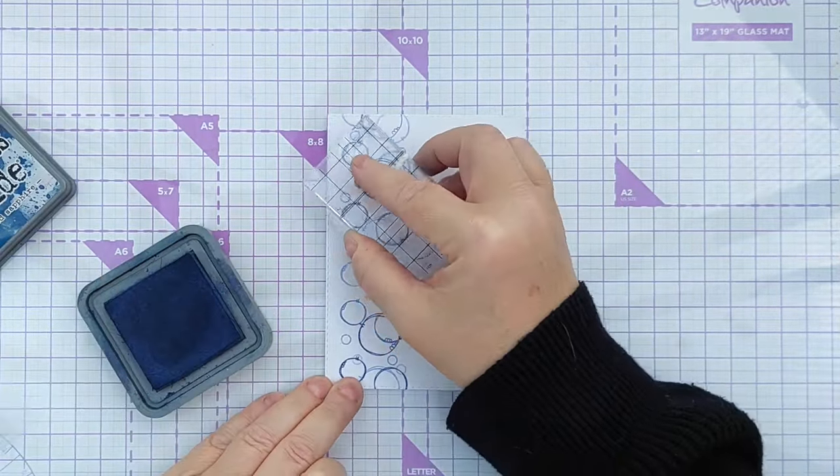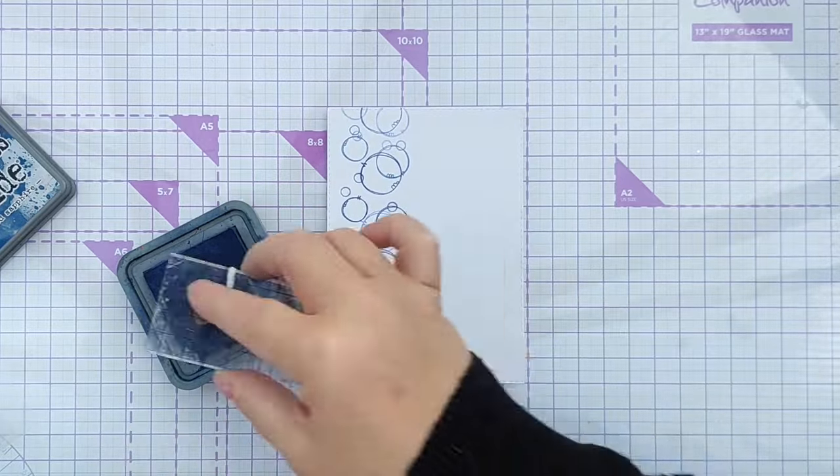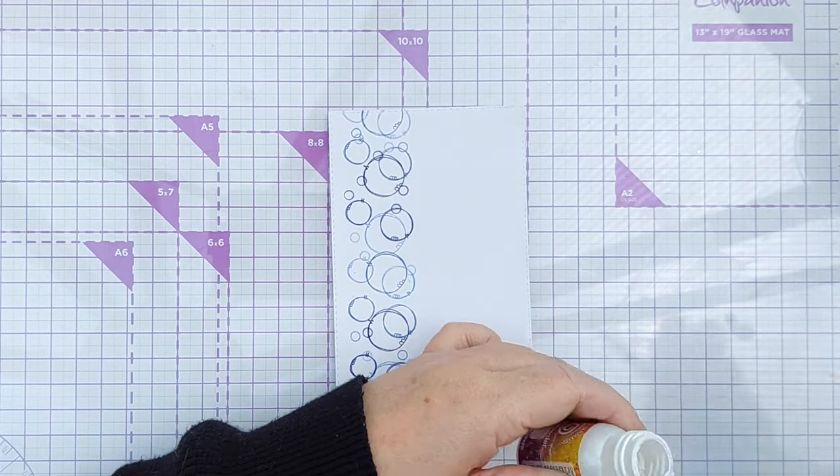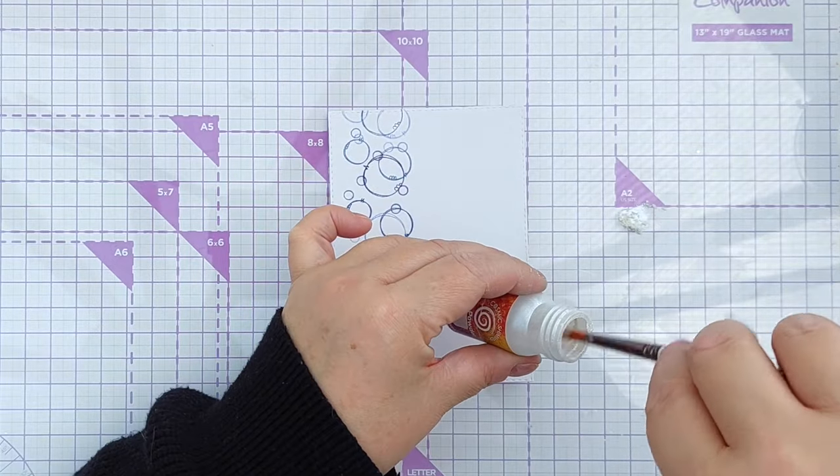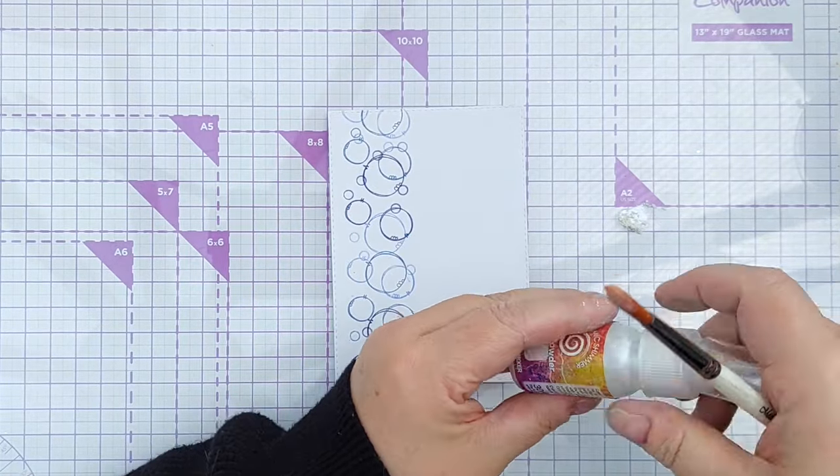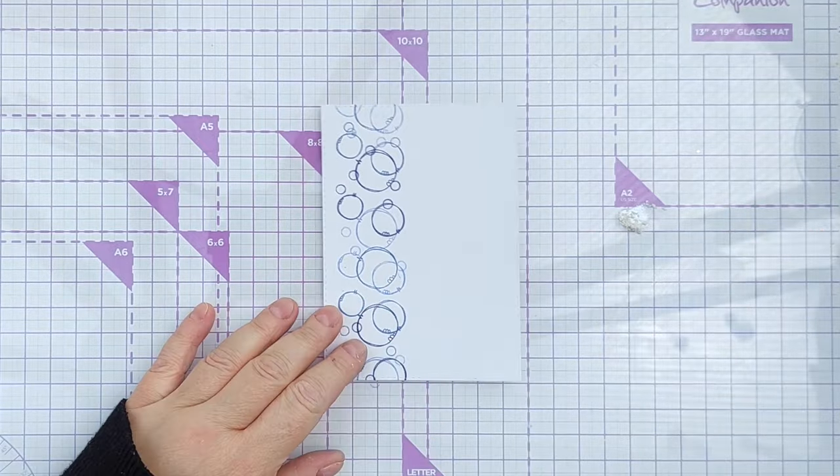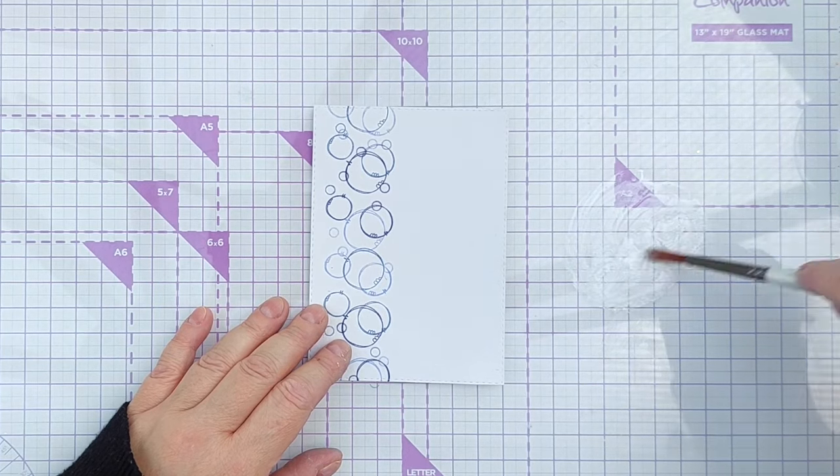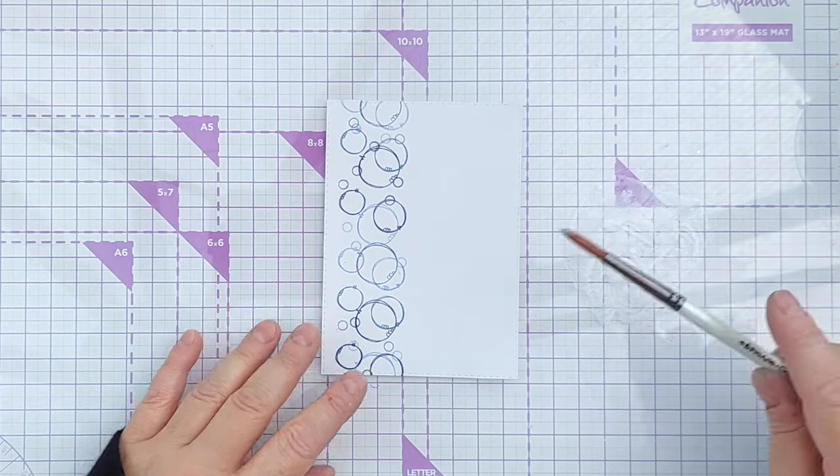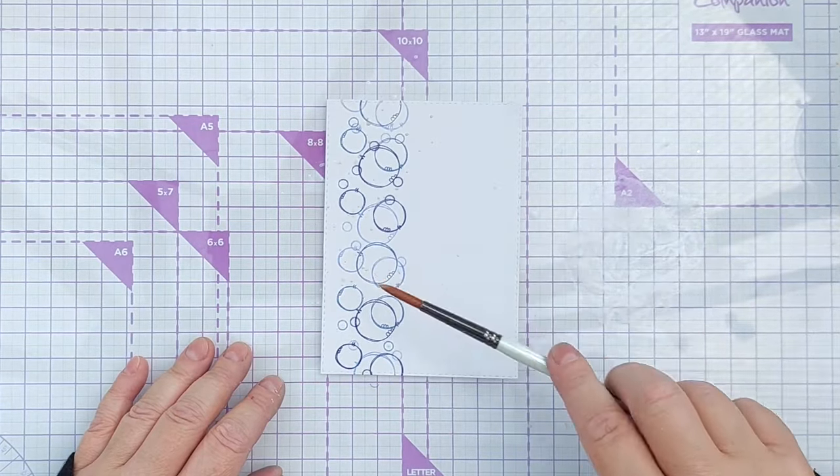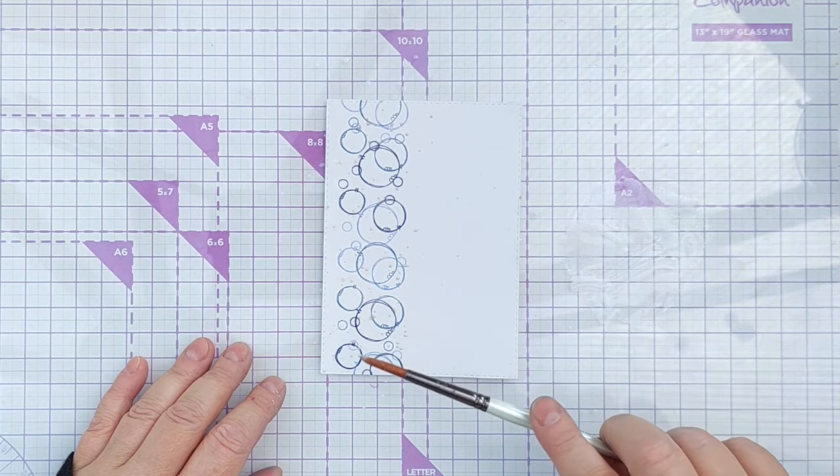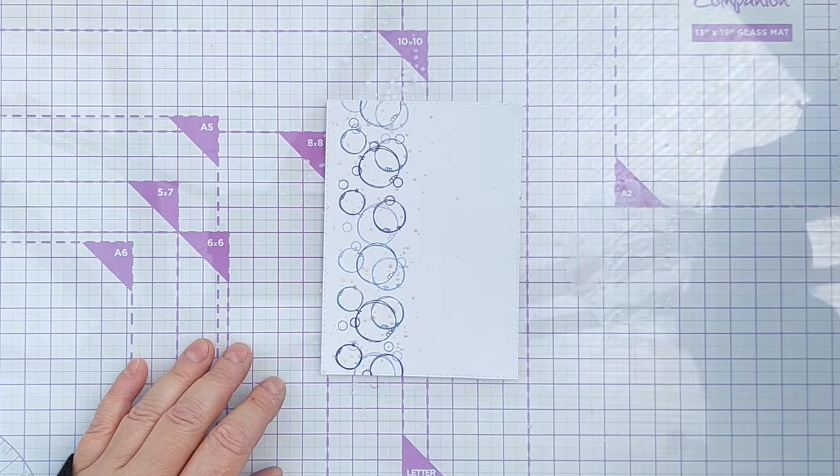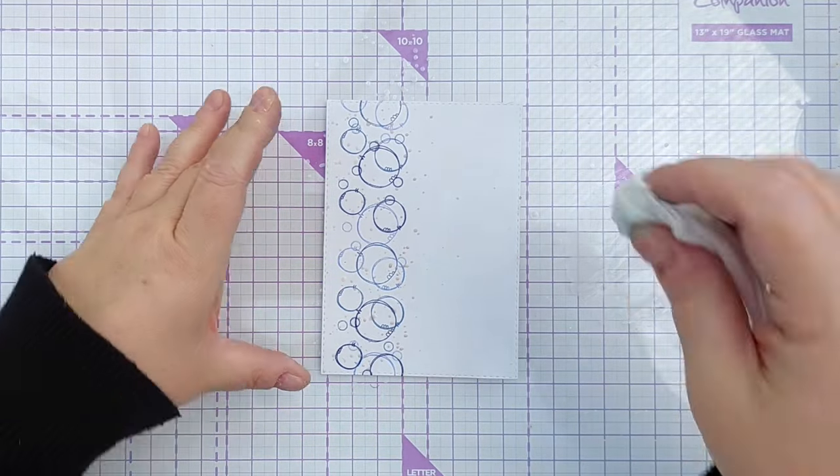Right, I'm going to make up some shimmery water using Cosmic Shimmer Pixie Powder and White Pearl Mixer and I'll just add some water to that, some nice clean water like this, get it fairly dilute because what I want to do is splatter on here to add some shimmer. But what's hopefully going to happen as well is that the shimmery splatters will pick up some of the colour from the inks.